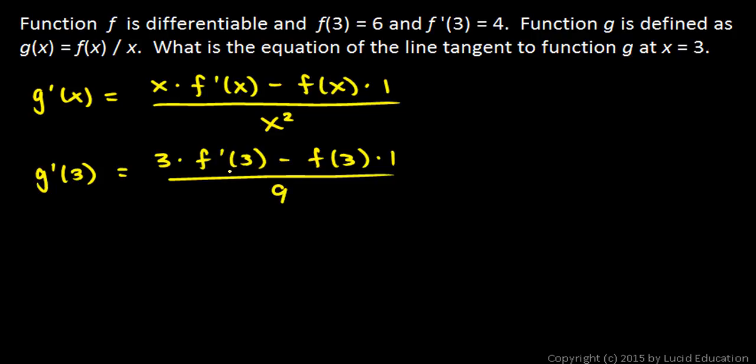And so now I have f'(3) and f(3) here, which are both known values. f(3) is 6, and f'(3) is 4. So this will be 3 times 4 minus 6 times 1 over 9, which is 12 minus 6 is 6 over 9, which is 2/3.